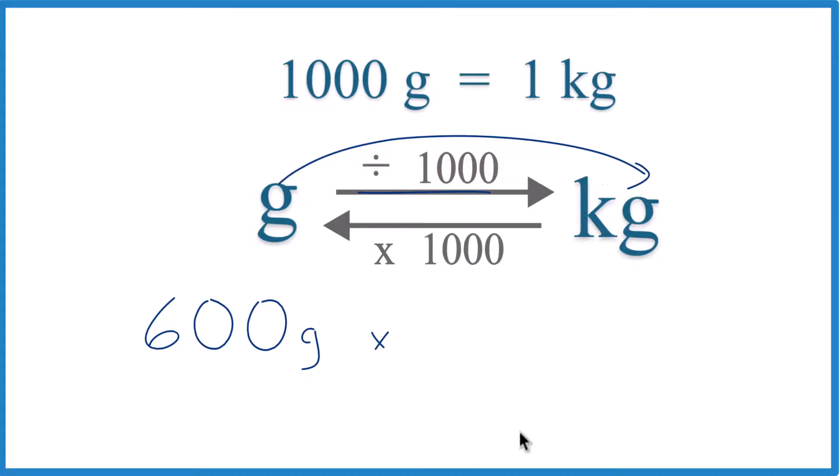So grams on the top, we're going to want grams on the bottom so they cancel out. So this will be our conversion factor here. And 1 kilogram equals 1,000 grams. That's our conversion factor.